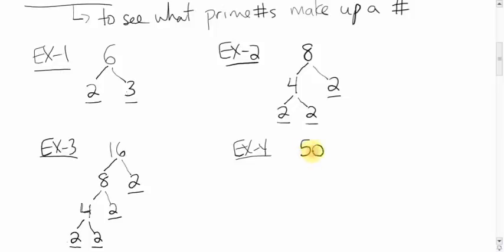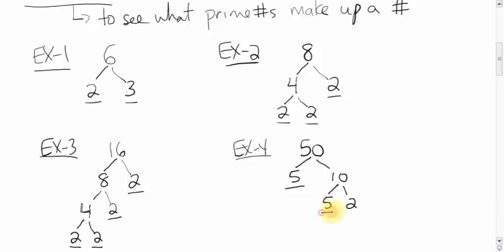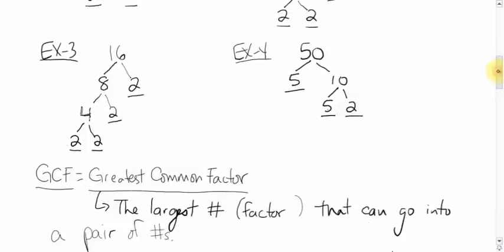For the number 50, a few numbers go into it: 2 and 25, or 5 and 10. Let's go with 5 and 10. 5 is already a prime number, so we stop factoring it. 10 is made up of the factors 5 and 2, which are prime, so we stop there. So the prime factors of 50 are 5, 5, and 2. That's how you do factor trees.